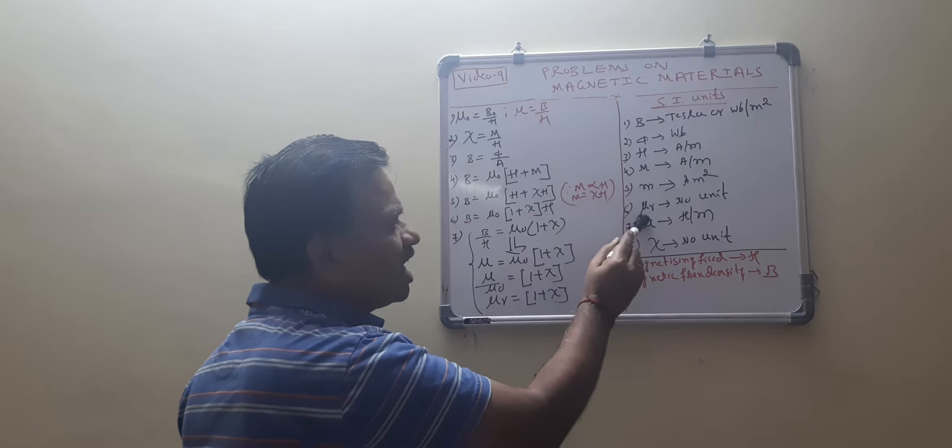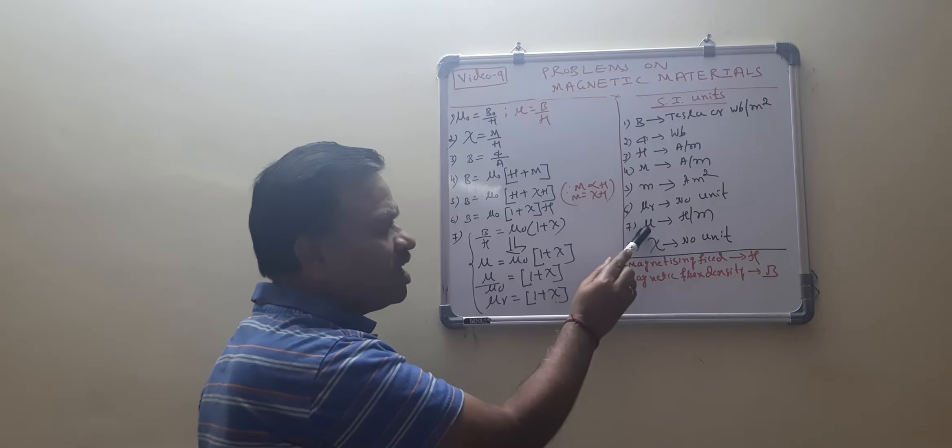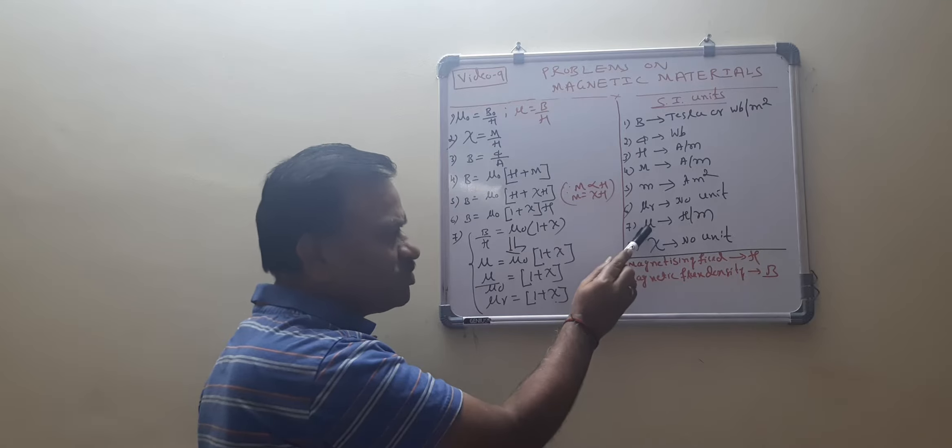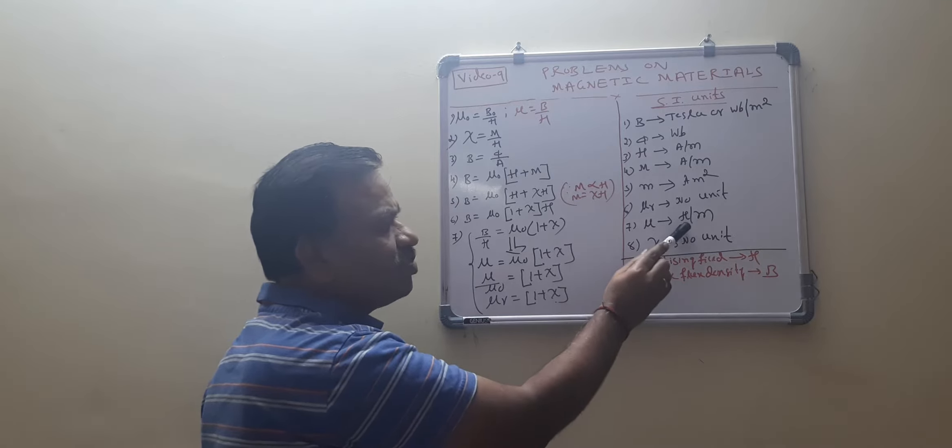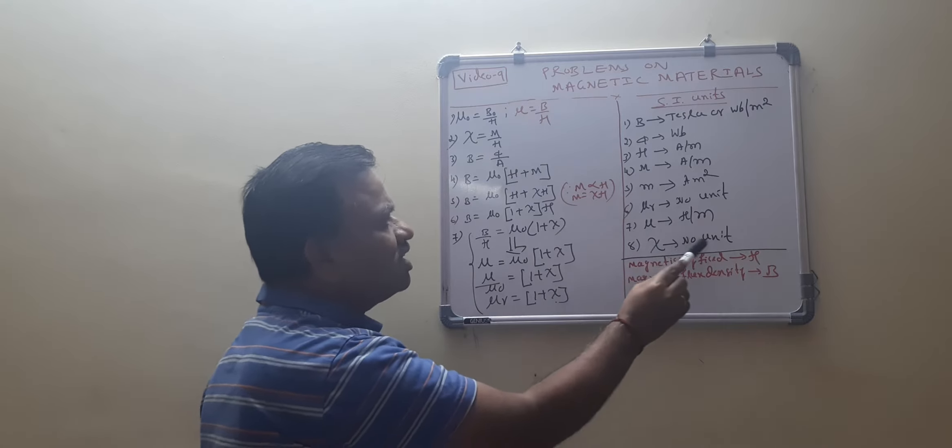And mu R, relative permeability, it has no unit. Mu, permeability of any space, the unit is what? Henry per meter. Then susceptibility, it has no unit.